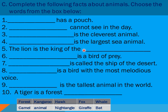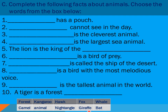Number six: blank is a bird of prey. Number seven: blank is called the ship of the desert. Number eight: blank is the bird with the most melodious — that means sweet — voice. Number nine: blank is the tallest animal in the world. Number ten: a tiger is a forest blank. The options are: forest, kangaroo, hawk, fox, whale, camel, animal, nightingale, giraffe, and bat — choose the right word for each blank.